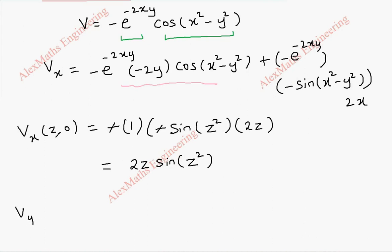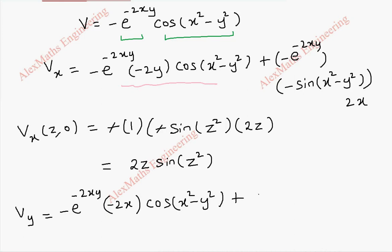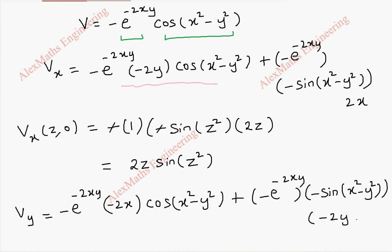In the same way, we are going to find vy. Applying the product rule: the first term's derivative is minus e to the power minus 2xy times minus 2x — because the derivative of y is 1 and the remaining terms are constant — then we keep cos of x squared minus y squared as it is. Plus, minus e to the power minus 2xy kept as it is, and the derivative of cos of x squared minus y squared is minus sin of x squared minus y squared times minus 2y.